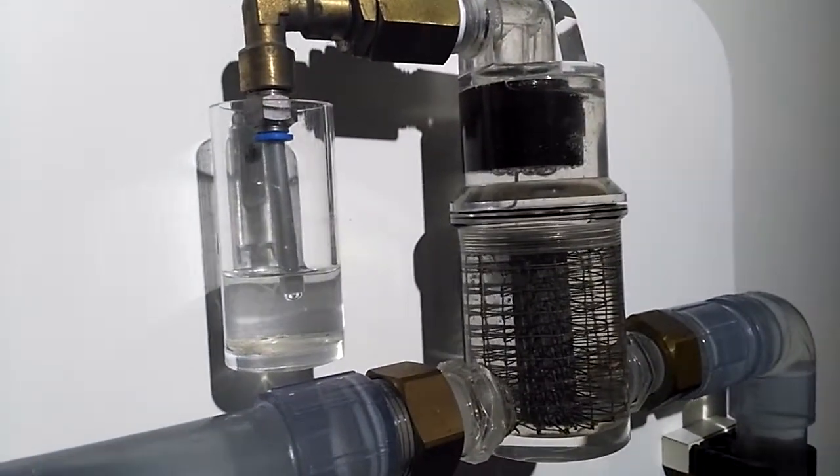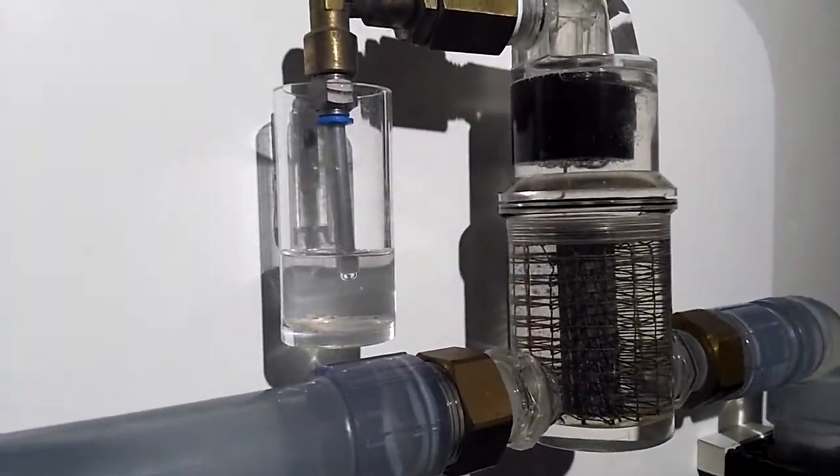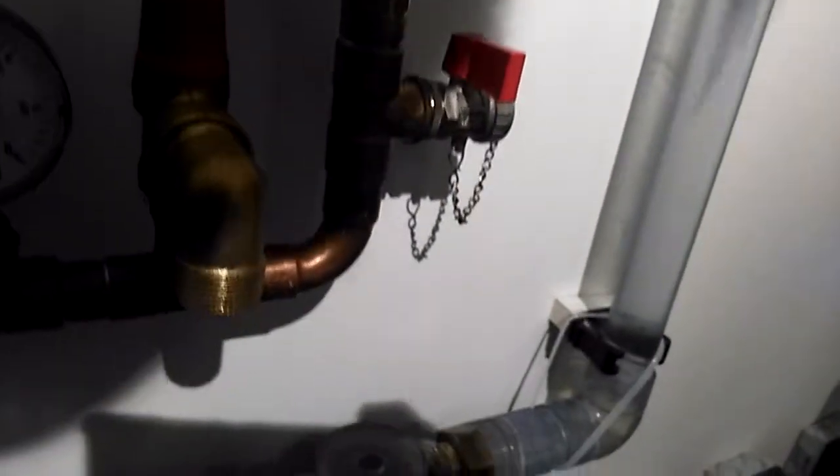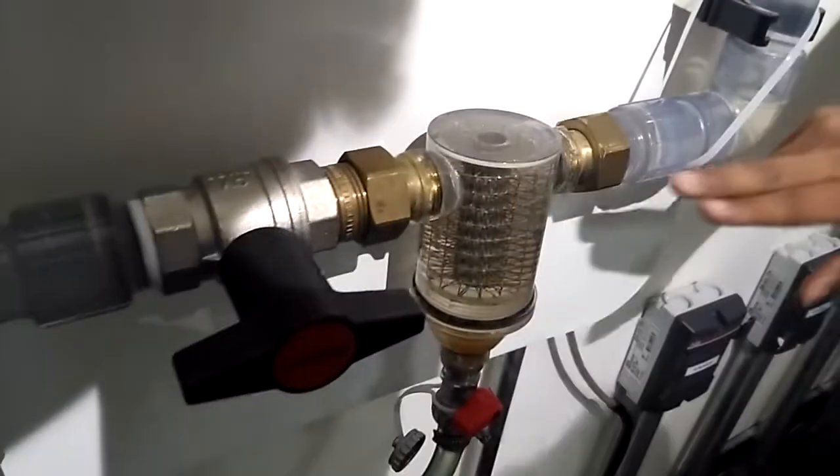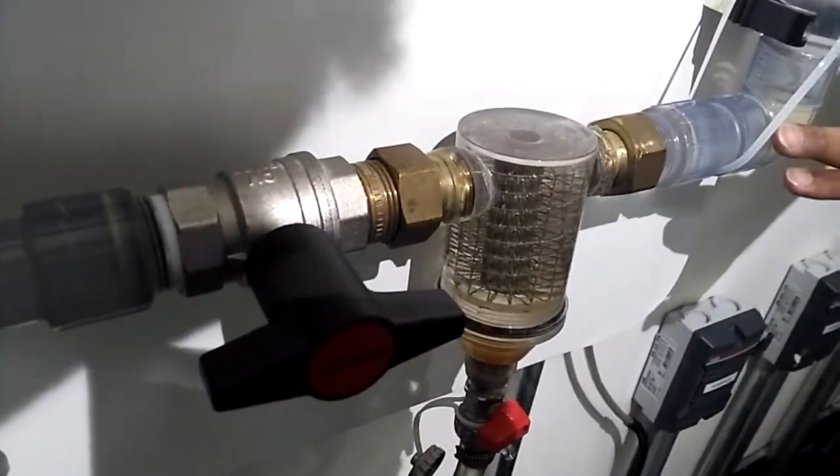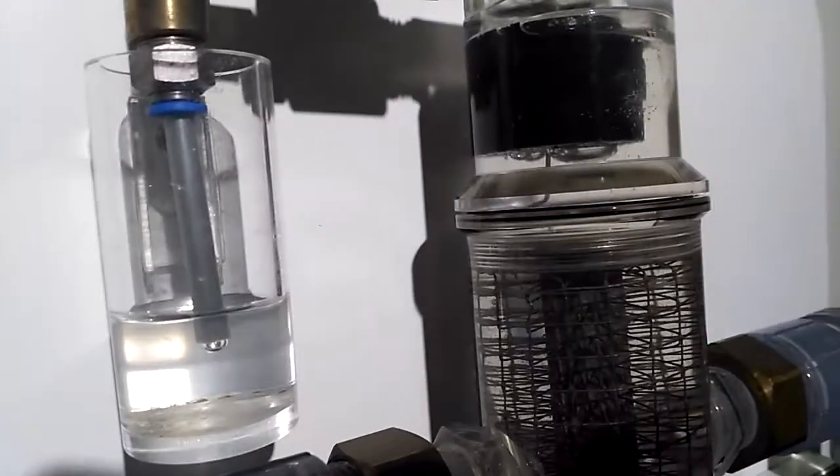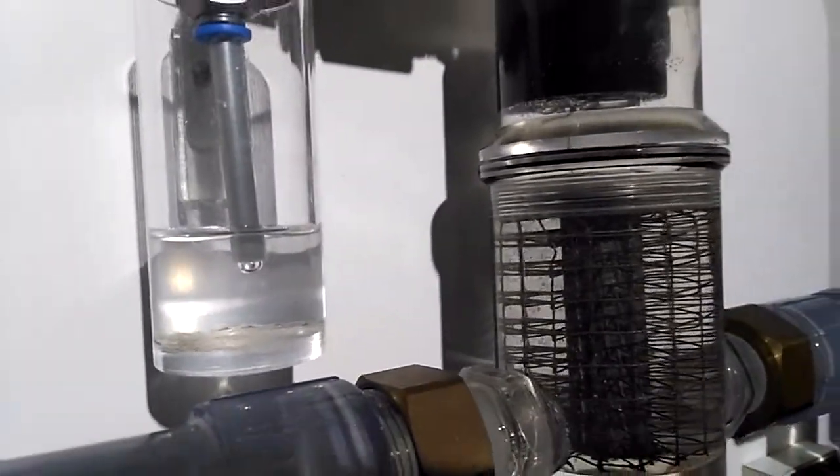Same thing with the dirt separator - we just make it the opposite way. Water goes in with the dirt particles and when it's hitting this wire mesh, the water particles lose energy and then by gravity it goes down.